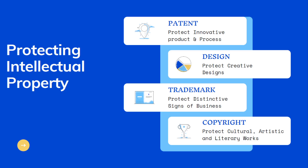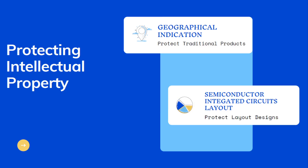So what are the ways to protect intellectual property? There are certain ways through which we can protect our intellectual property. First, patent, which is used to protect innovative products and processes. Second, design, which is used to protect creative designs. Third, trademark, which is used to protect distinctive signs of businesses. Fourth, copyright, which is used to protect cultural, artistic, and literary works. Fifth, geographical indication, which is used to protect traditional products. And last, semiconductor integrated circuits layout, which is used to protect layout designs.